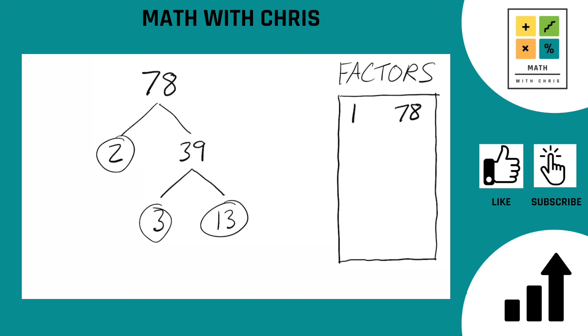The prime factors of 78 are 2, 3, and 13. Let's put those down here. 2 times 3 times 13. That does indeed equal 78.